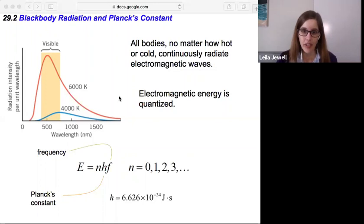This electromagnetic energy, this light given off, is quantized. It's not just any value, but it has to do with that particular wavelength of light or the frequency of light, because we know frequency and wavelength are inversely proportional.